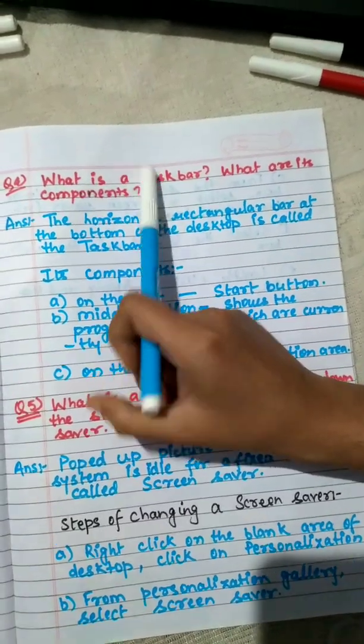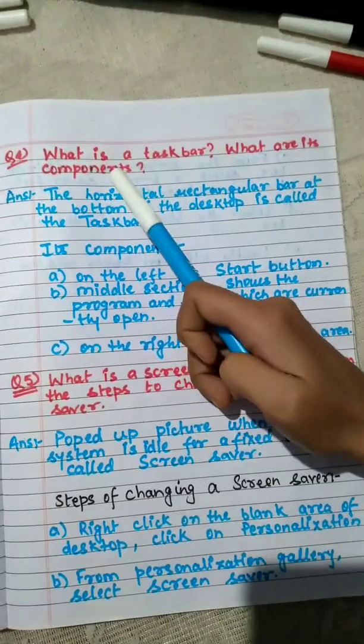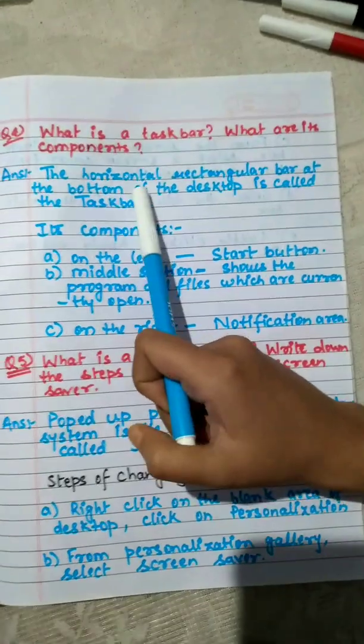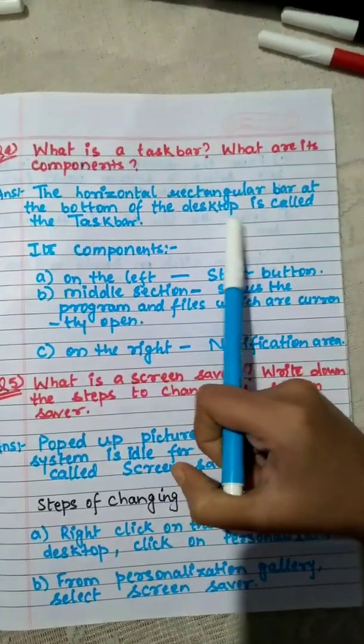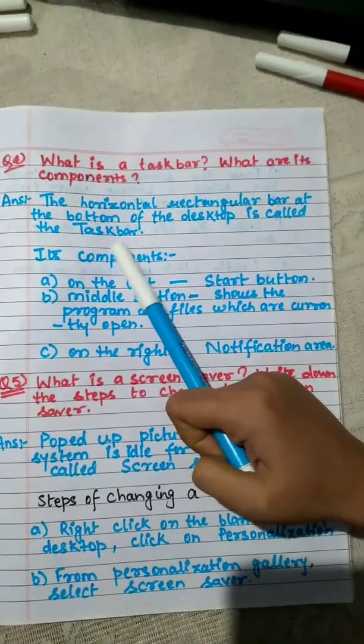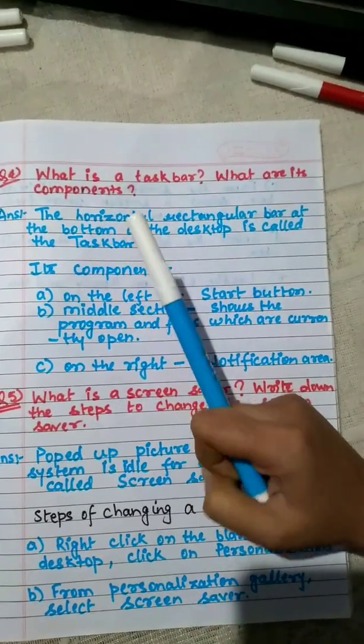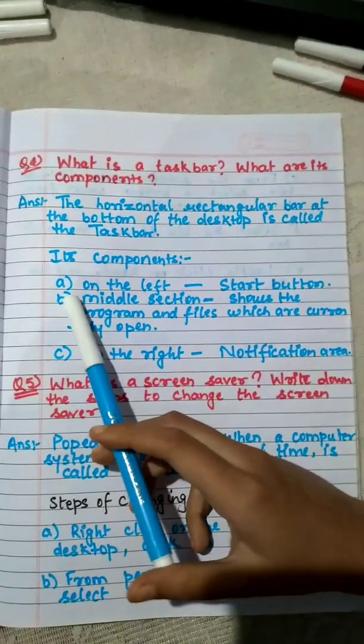Next is question number 4: What is a taskbar and what are its components? The horizontal rectangular bar at the bottom of the desktop is called the taskbar. Now let's discuss its components.